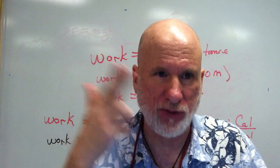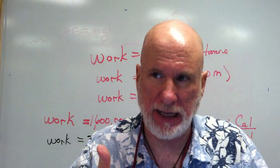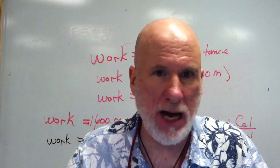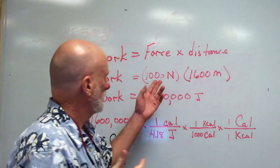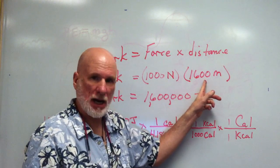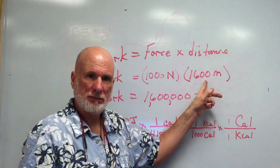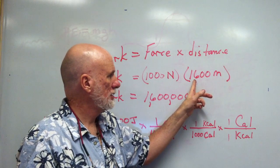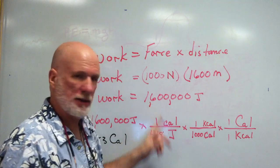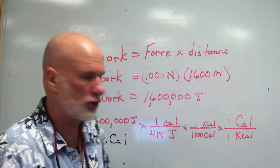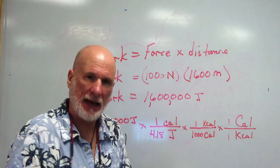Work says force times distance. It doesn't say anything about time. So, force times distance, 1000 newtons times a mile, which is 1600 meters, is 1,600,000 joules.